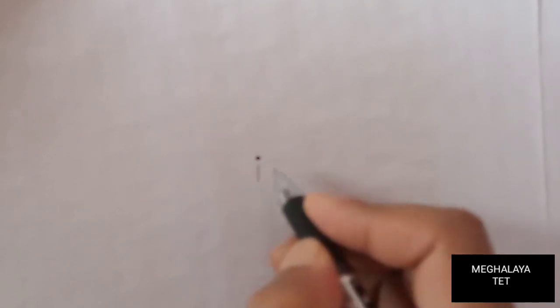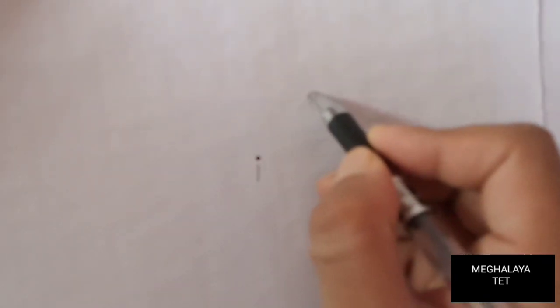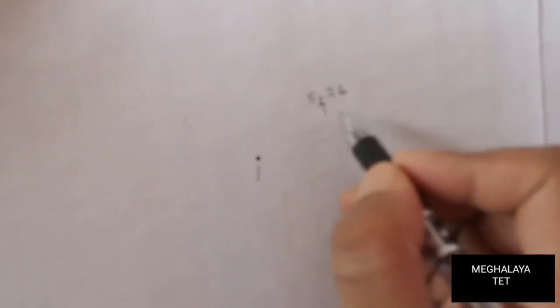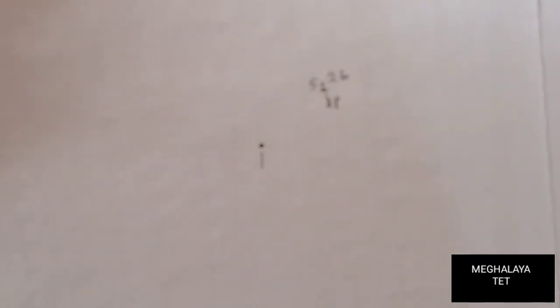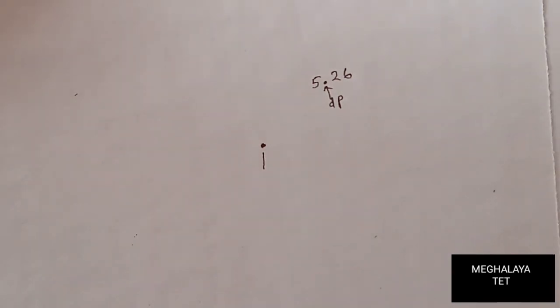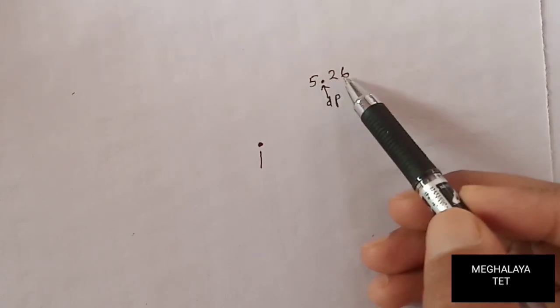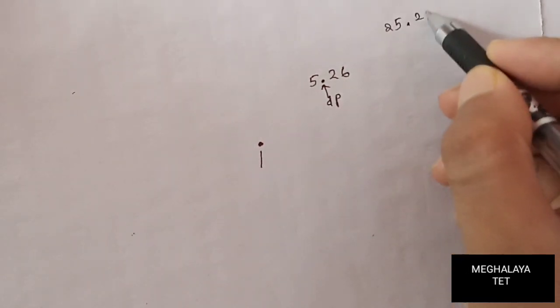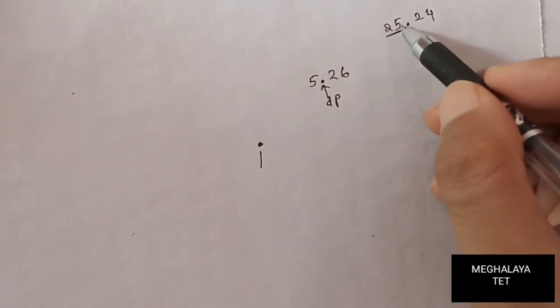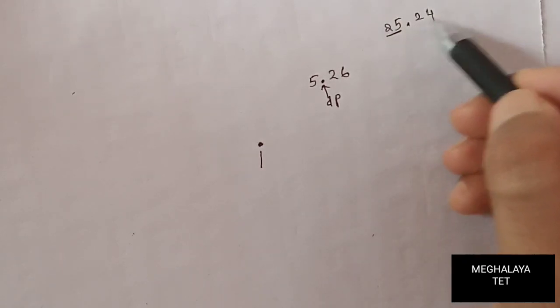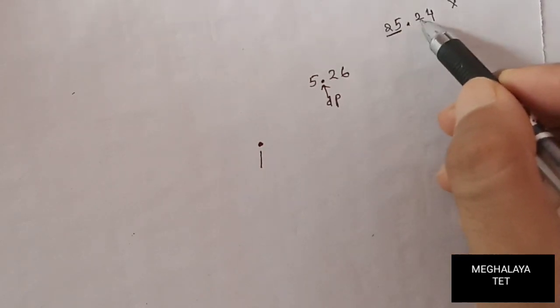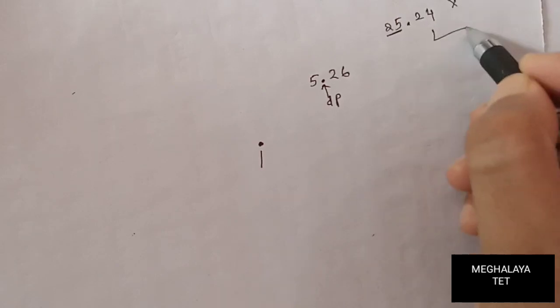The first concept is about the decimal point. For example, take the number 5.26 — this point here is the decimal point. Similarly, for 25.24, the numbers before the decimal point we say as 25, and after that we say 24. So 25.24 is the correct way to read it.